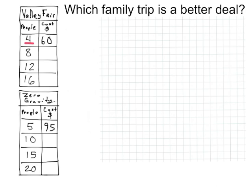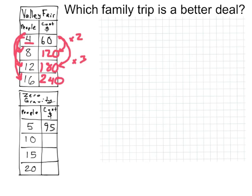So for Valleyfair for four people, it's $60. Well, four times two is eight. So we're going to multiply 60 times two. And that means it's going to be $120 to go to Valleyfair for eight people. Four times three is 12. So I'm going to do 60 times three is 180 for 12 people. And four times four is 16. So four times 60 is $240 for 16 people.